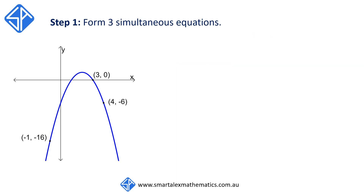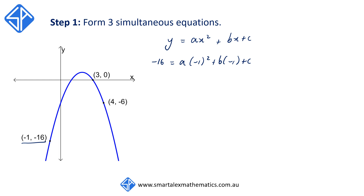Starting off with step one, we're going to utilize the general equation of the parabola, y is equal to ax squared plus bx plus c. We're going to first use the first point, negative 1, negative 16, to substitute into this equation to form our first equation. So we're going to get minus 16 is equal to a times minus 1 squared plus b times minus 1 plus c, which simplifies to a minus b plus c is equal to minus 16.